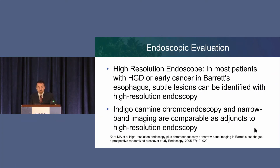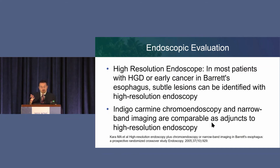High-resolution endoscopy is very good for identifying lesions. If you take your time and really do a good job, you can find these subtle lesions. NBI, indigo carmine — which is not available anymore — and other modalities all help in identifying lesions. It's very important: you start with the evaluation. It's not about just throwing a band and taking a lesion out.